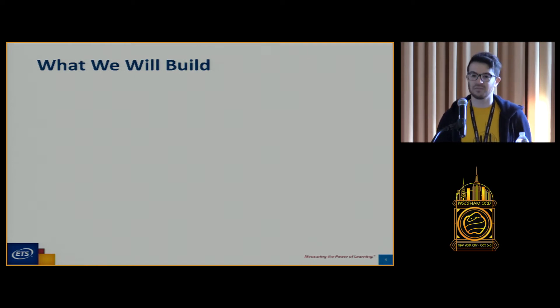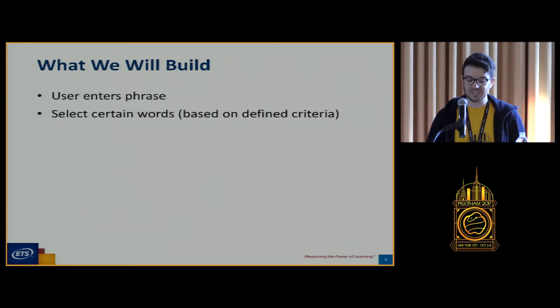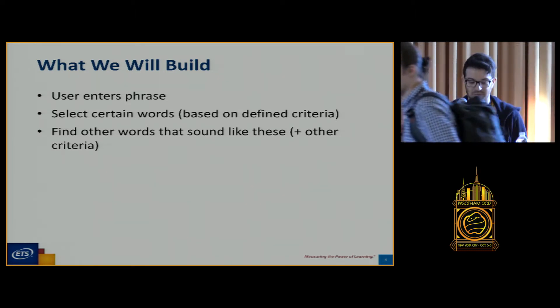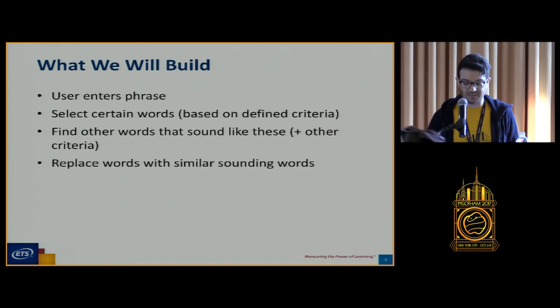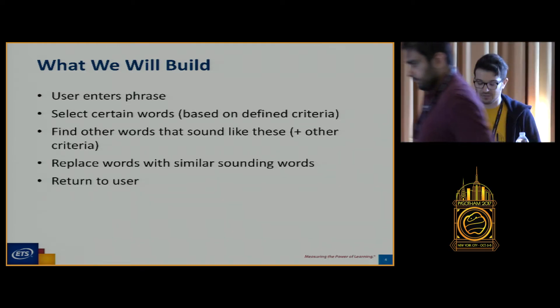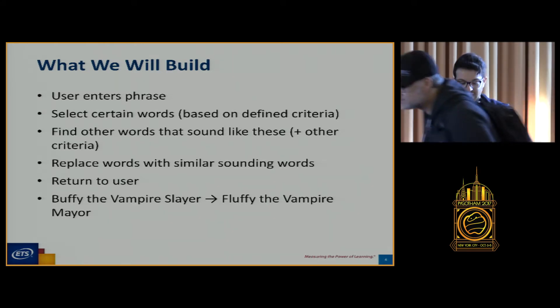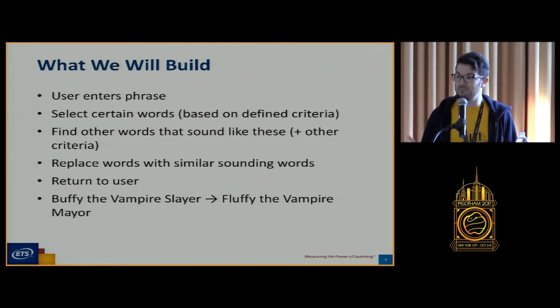So a high level overview of what we're actually building. A user will enter a phrase. We will select certain words from that phrase based on some defined criteria. We will find other words that sound like those plus some other criteria that we will define. We will replace words with words that sound like them and we will return them to the user. So we enter Buffy the Vampire Slayer and it returns something like Fluffy the Vampire Mayor.